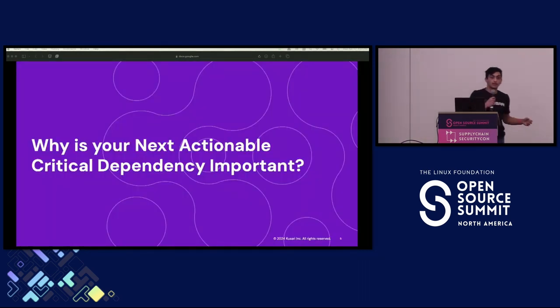Now that we have a basic understanding of the goal of GUAC, let's understand the feature this talk is going to be focusing on. This feature is called the next actionable critical dependency. It's a mouthful, I know. But now, two questions arise. First, what does it do? And second, why is it important?